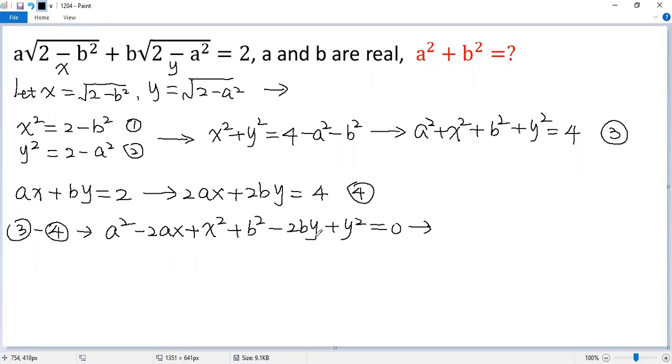So you see the terms combine to perfect squares: a minus x squared plus b minus y squared equals 0. Since we only consider real numbers, the only possibility would be a minus x equals 0 and b minus y equals 0. So we get x equals a and y equals b.